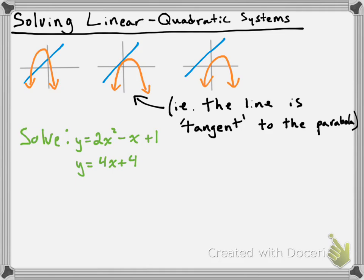Remember that when you were doing linear systems, you learned two methods to solve them: substitution and elimination. Within quadratic systems, you can't really do elimination — you're going to be relying on substitution. At the point of intersection, the y values and x values are going to be the same, so we're going to substitute one equation into the other.